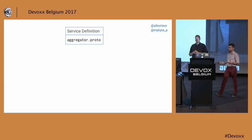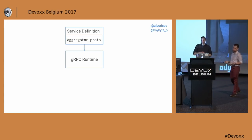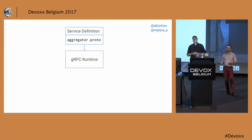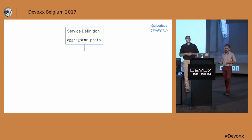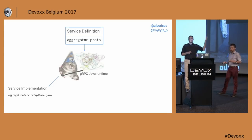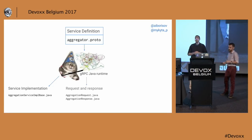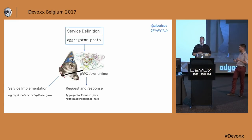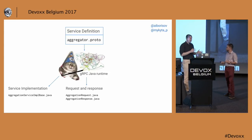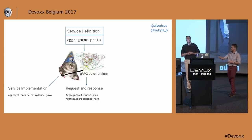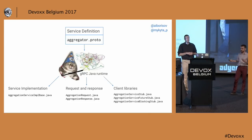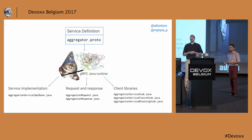Now we use the gRPC runtime to generate classes from the IDL. In Java, we can use the gRPC Java runtime from the command line, or use build system plugins available for Gradle, Bazel, and Maven. Calling the gRPC Java runtime generates an abstract service class, and generates request and response objects with builders. We can also generate strongly-typed client libraries, or stubs. It's easier than writing them manually and will just be an extra step in your build process.